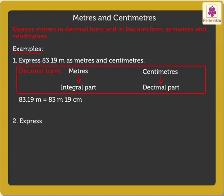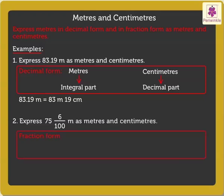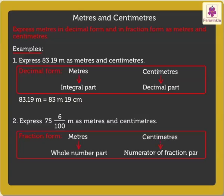Express 75 and 6 upon 100 meters as meters and centimeters. We know that meters form the whole number part and centimeters the numerator of the fraction part. Here, we get the answer as 75 meters and 6 centimeters.